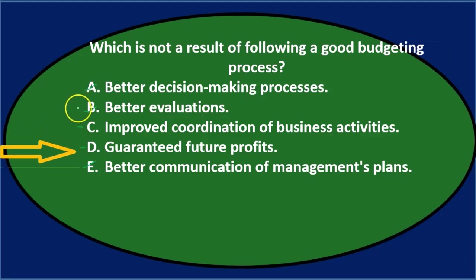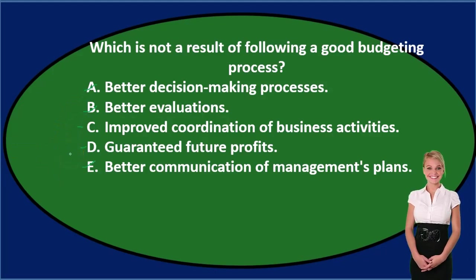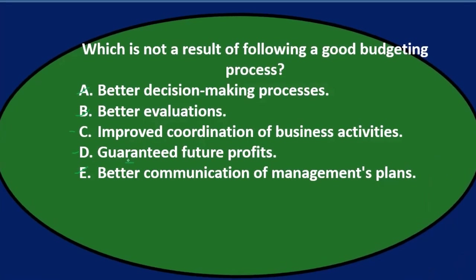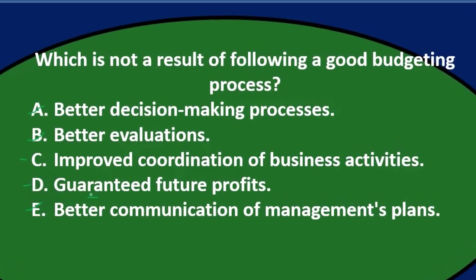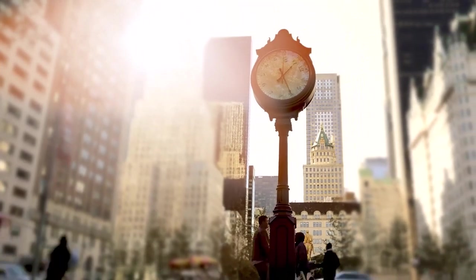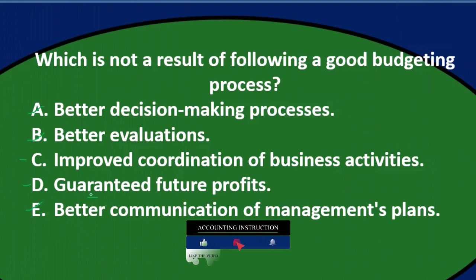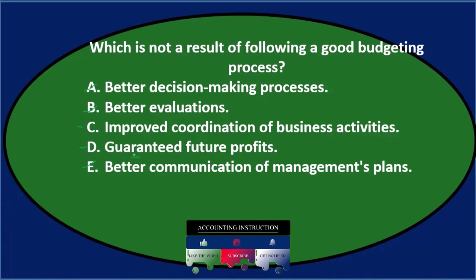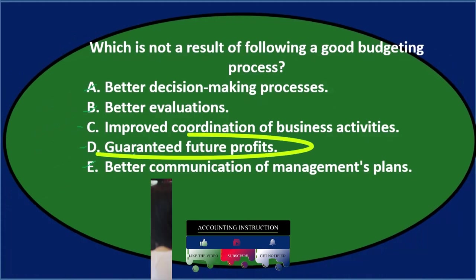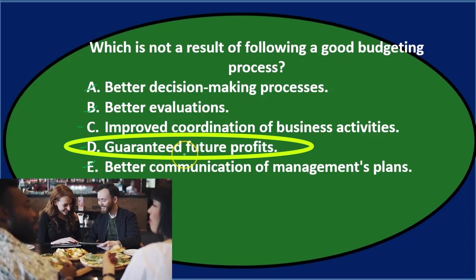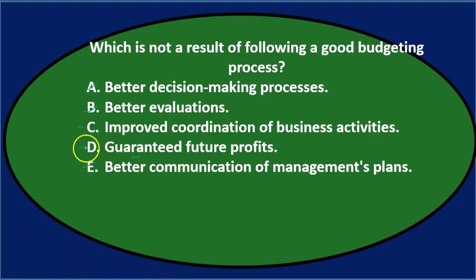Notice that many of the answer choices use words like better decisions, better evaluations, better this, better that. But one of them uses the word guaranteed. Whenever you see an absolute word in an answer — guaranteed, always, never — it only takes one exception for the entire statement to be incorrect. So be very careful with those absolute words. In this case, nothing guarantees future profits. You can ask about anything and say, well, does this guarantee future profits? No, it doesn't. Nothing guarantees future profits. Basically, anything after the word guaranteed is going to disqualify that answer.